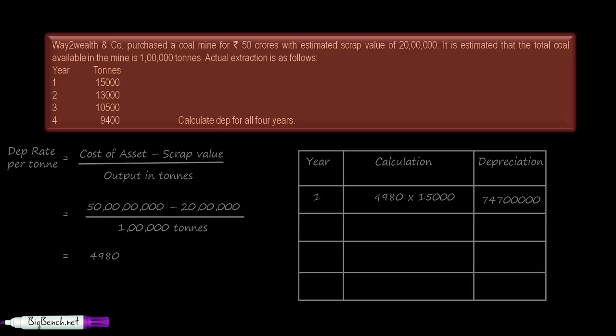Third year: 4,980 times 10,500 comes to 5 crore 22 lakhs 90,000. And fourth year: 4,980 times 9,400 tons gives 4 crore 68 lakh 12,000 depreciation. So this is the way we calculate depreciation under depletion method. Thank you.